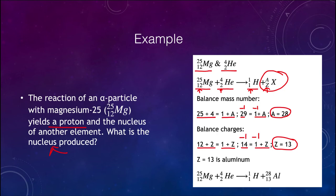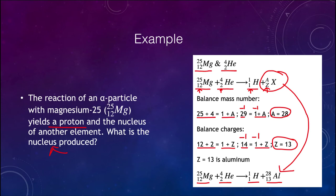We can now write the complete equation: magnesium-25 plus helium-4 yields a proton plus aluminum-28. That gives us the final equation. Aluminum-28 is what is produced when we bombard magnesium with alpha particles.